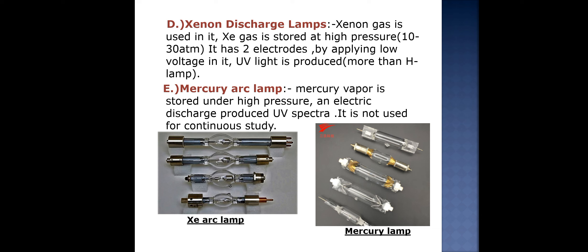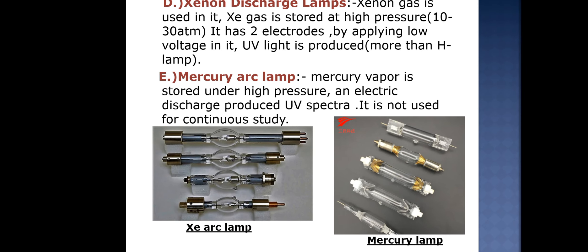The fifth radiation source is the mercury arc lamp, in which mercury vapor is stored under high pressure and an electrical discharge produces UV spectra. It is not used for continuous study, and these lamps are also expensive.